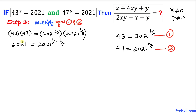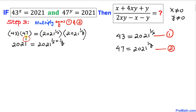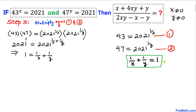On the left hand side we now have 2021 to the power 1. Since the bases are the same on both sides, we can equate the exponents. Therefore: 1 equals 1 over x plus 1 over y. Let's call this Equation 3.